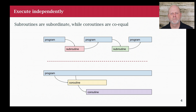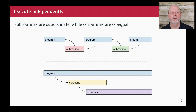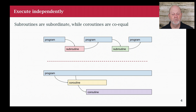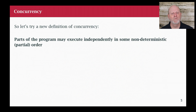I want to talk about executing independently for a second. Back in the old days, we had subroutines: I have my main program, it calls some subroutine and returns, calls another subroutine and returns. The notion of a subroutine is it's a subordinate part of your main program — when it's running, the subroutine isn't. Somewhere along the way we got the notion of co-routines, which are co-equal: you start a co-routine and it runs alongside your main program. That doesn't mean it runs at the same time — it was possible to run co-routines on old processors with just one CPU. Putting these parts together, my working definition of concurrency is: parts of the program may execute independently in some non-deterministic, possibly partial order.